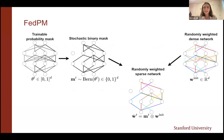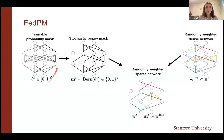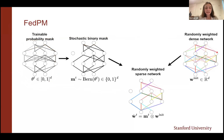The server initializes a dense network with random weights, and all clients share the same random-weighted dense network using the same random seed. Everyone freezes the parameters throughout training. Instead, clients train a probability mask with the same architecture as the dense network. Each connection in this probability mask has a value between zero and one, representing the probability that the corresponding connection stays in the sub-network.